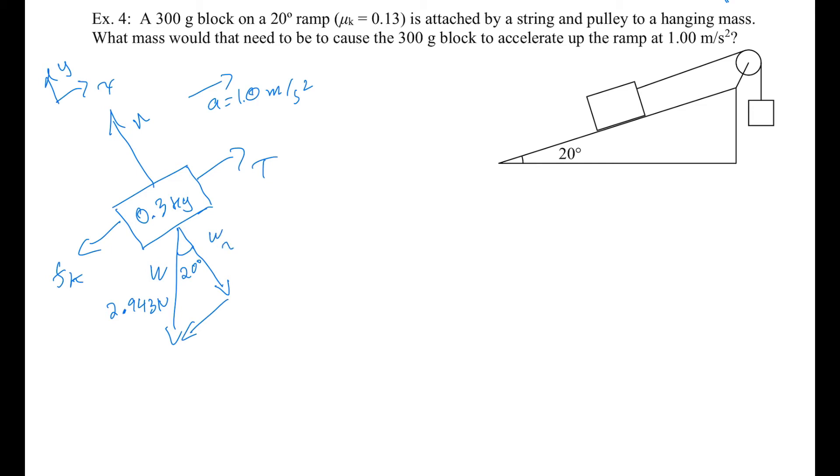This is going to be W_y and this is going to be W_x. We'll do 2.943 times the cos of 20 degrees and that's 2.766 newtons and 2.943 times the sine of 20 degrees is 1.007 newtons.